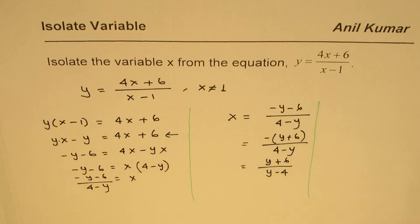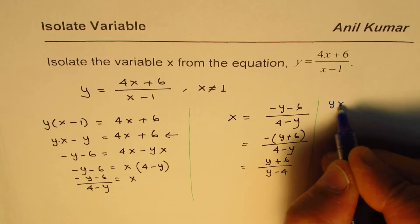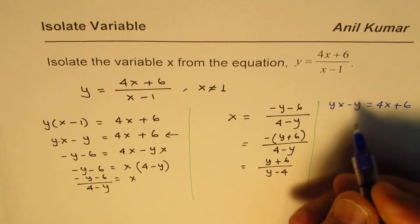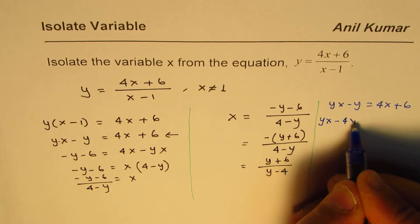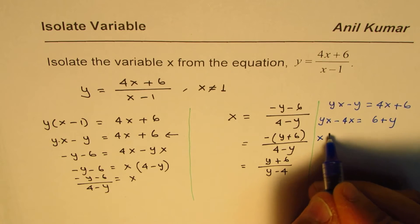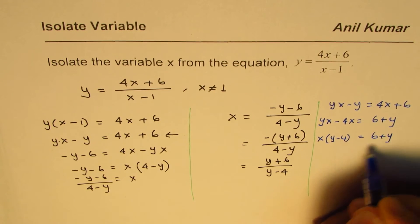Let me show you this once again. What we have is yx minus y equals 4x plus 6. If I get x to the left side, I get yx minus 4x equals 6 plus y. Taking x common, we get y minus 4 times x equals 6 plus y.